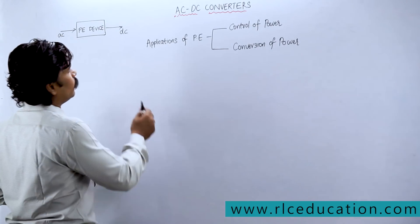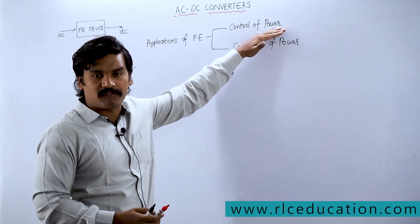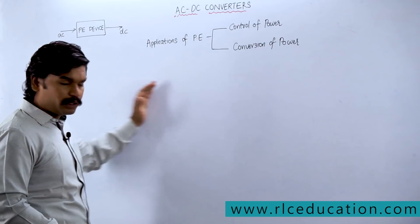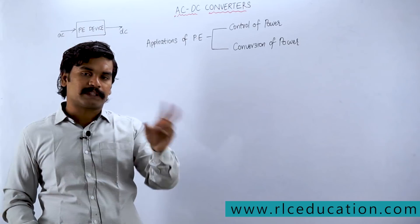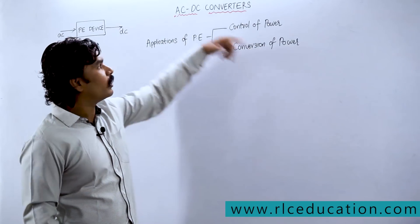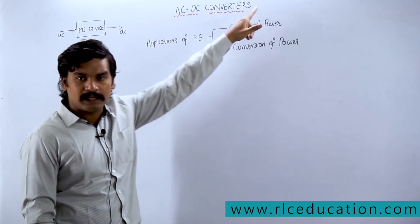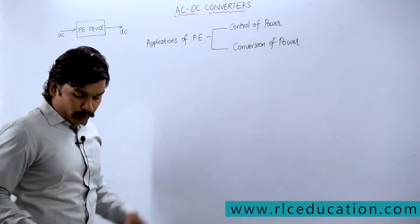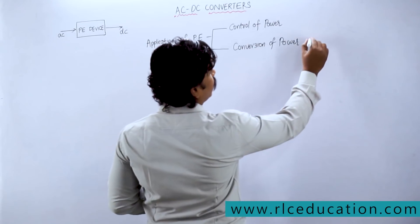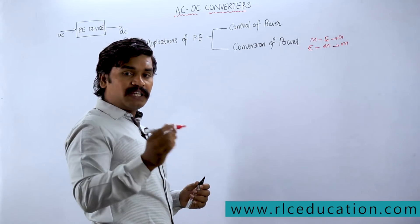Before going into the subject, let me recite the applications of power electronics. The main purpose of power electronics is to control the power flow in a system — such as a power system from generator to load. For controlling active power or reactive power, you require a power electronic device. Conversion of power — converting from AC to DC or DC to AC as an inverter — also requires a power electronic device.